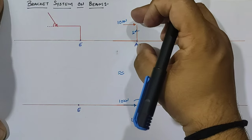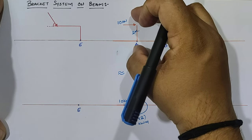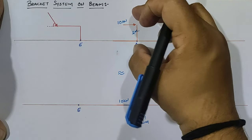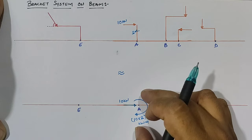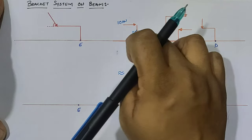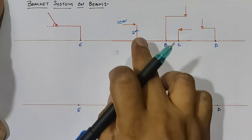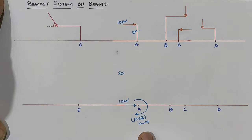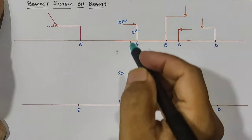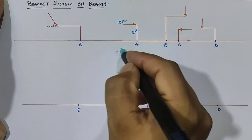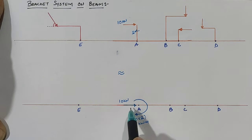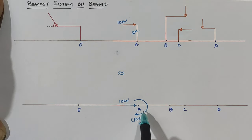According to the given bracket system, if we provide the equilibrium of the system — representing the effect of the bracket by another type of loading — both beams are equivalent. For easy calculation, we convert the bracket system into a point load and a moment according to the given condition.